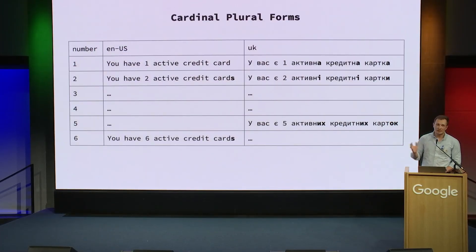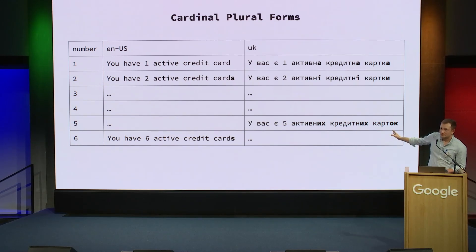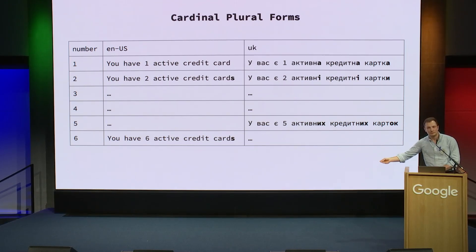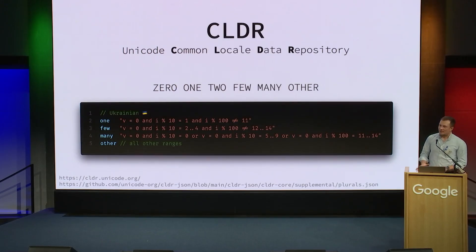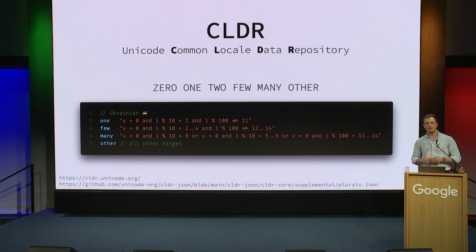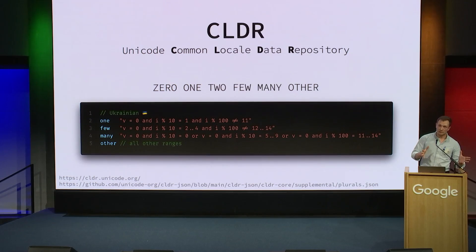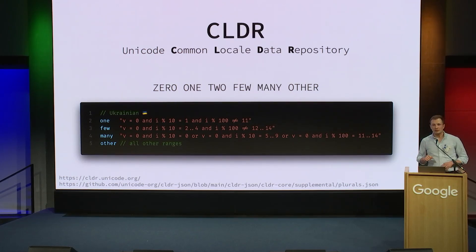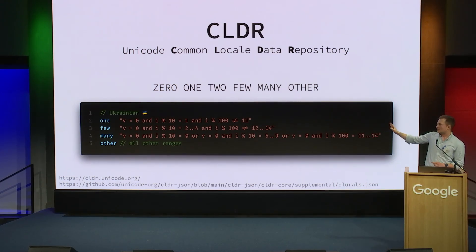In German and English, whenever we approach the number two, we start using the plural form, and then we just continue. In Ukrainian and other Slavic languages, once we approach the number five, we actually start to use a third form. And it gets even crazier than that. Luckily, we don't have to think about it that much anymore because the CLDR exists — the Unicode Common Locale Data Repository — which defines six plural forms common to the 500 languages they know, yet not all languages implement all of the forms. For example, Ukrainian implements one, few, many, and other. We get XML and JSON files from the Unicode Consortium that define what form to pick for what particular number. The Arabic version actually uses all six.